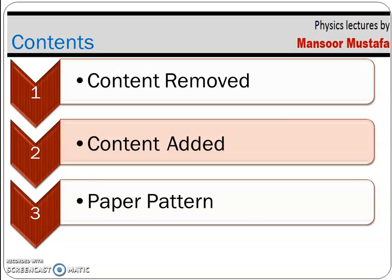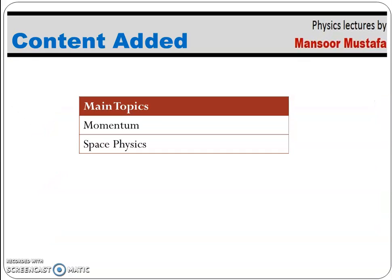Now for the new topics being added in the revised syllabus applicable from 2023 onwards. There are two main new chapters: first is momentum, which was previously part of IGCSE but not O Level — it is now included in the O Level syllabus. Second is space physics, a completely new chapter being added to the syllabus.